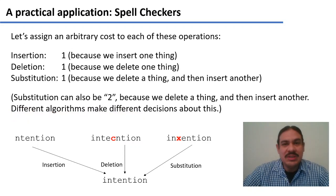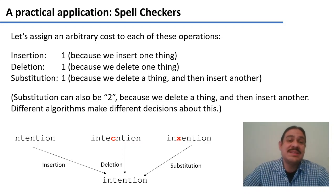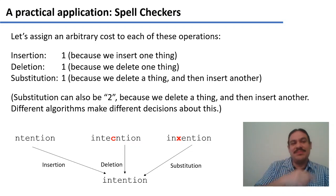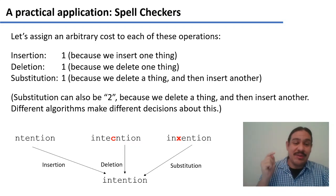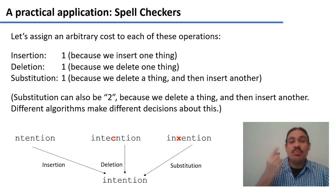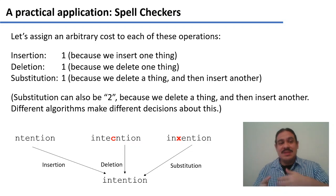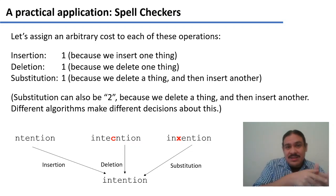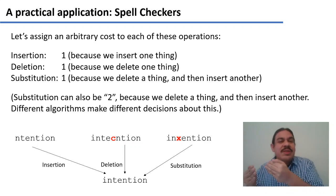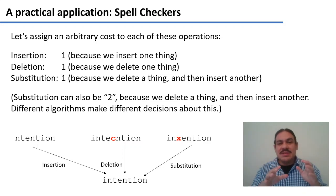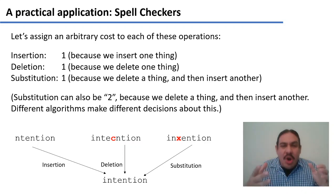We could assign an arbitrary cost to each of these operations — for example, they could all cost the same. Maybe it costs one unit of effort to insert a letter, one unit to delete a character, and one unit to substitute something. Some implementations have substitution with a cost of one, and sometimes a cost of two, because you could think of substitution as two things: deleting the x and inserting the t. Individual implementations may vary, but what's constant is that you need to assign a cost to the operations.